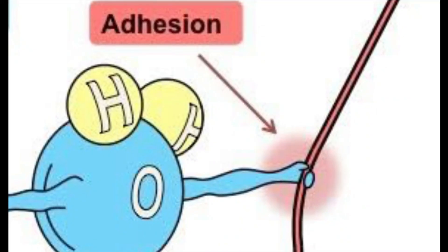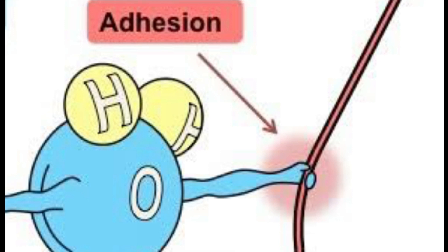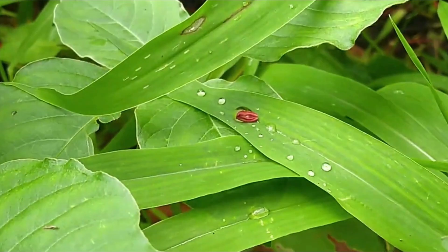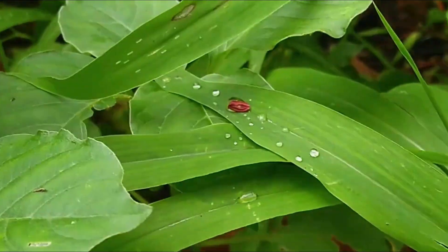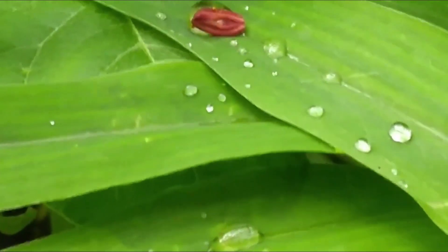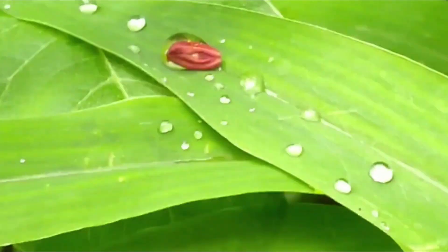Unlike cohesion, where the same kind of molecules are attracted to each other, adhesion is the property by which different or unlike molecules are attracted towards each other. The best example of adhesion is a water drop on leaves.